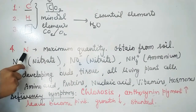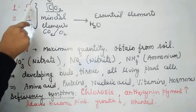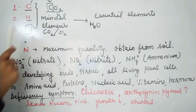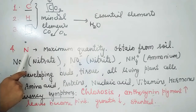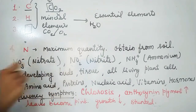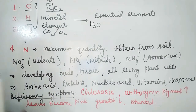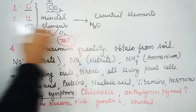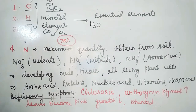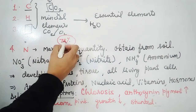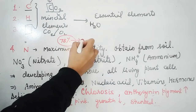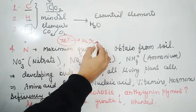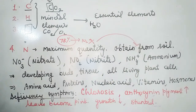The fourth most important element is Nitrogen, which is required in the maximum quantity among mineral nutrients. We know that plants cannot absorb free nitrogen directly. Although the atmosphere is 78% nitrogen, plants do not absorb free nitrogen, so it is not automatically available to them.